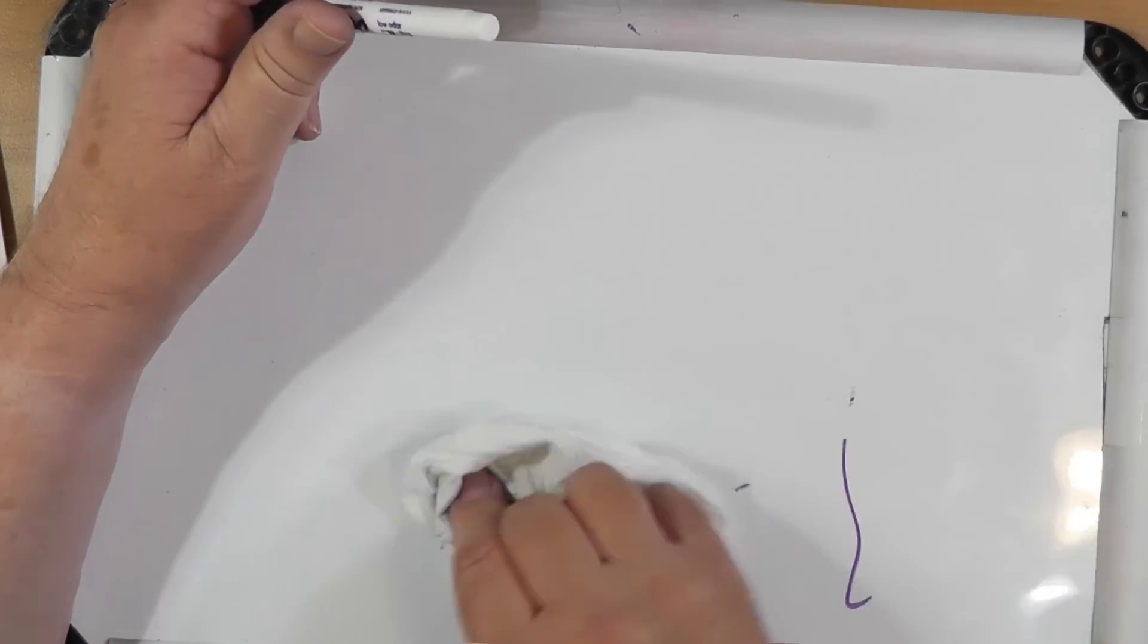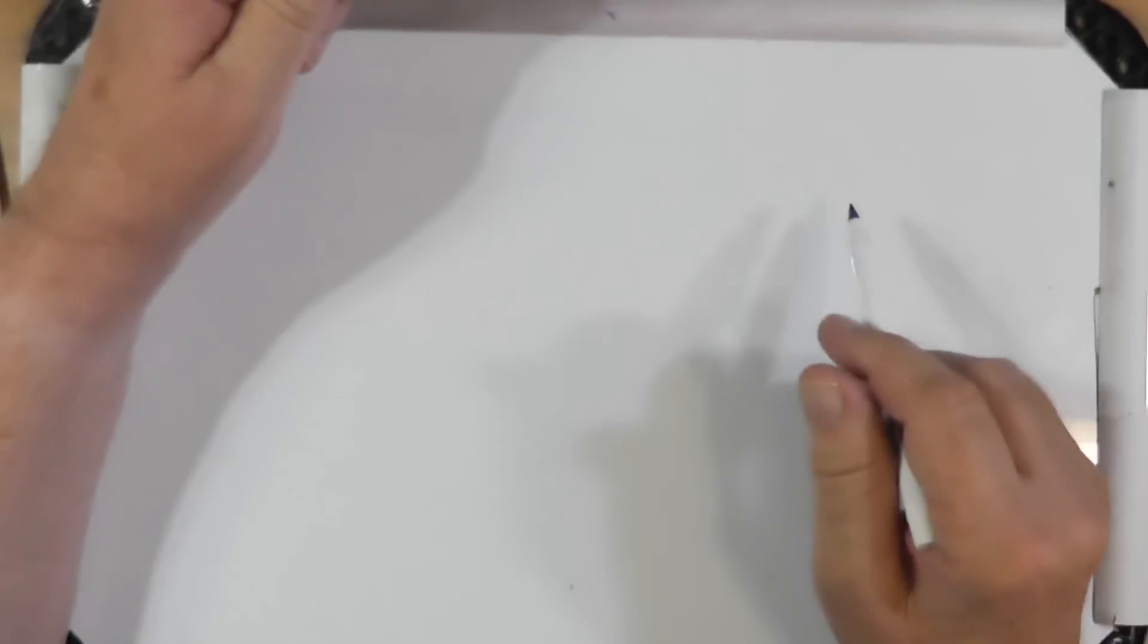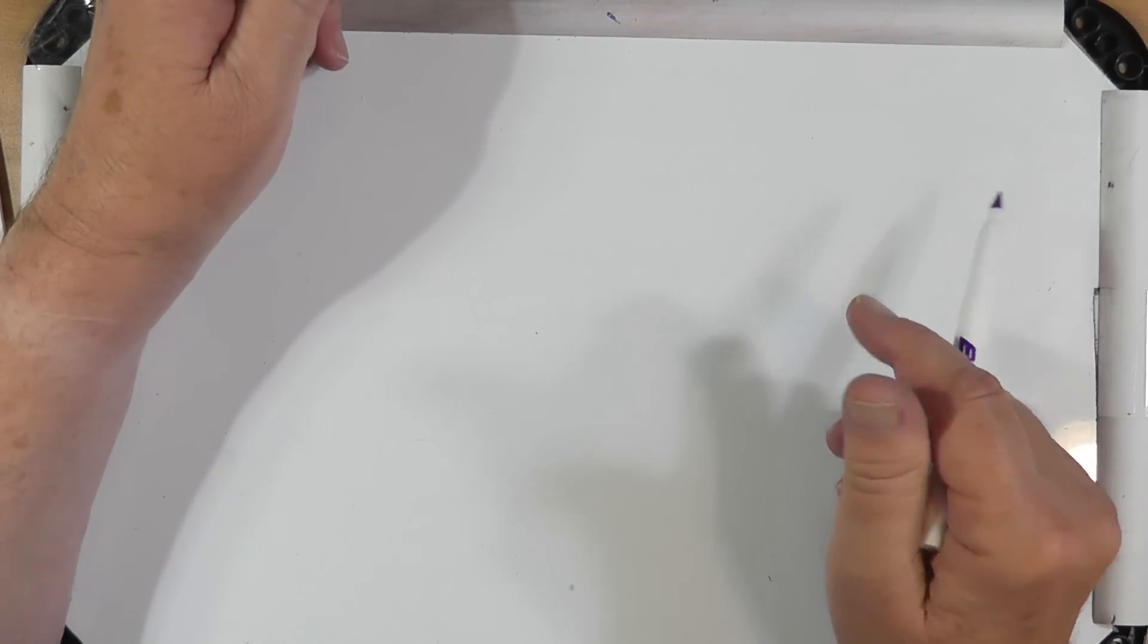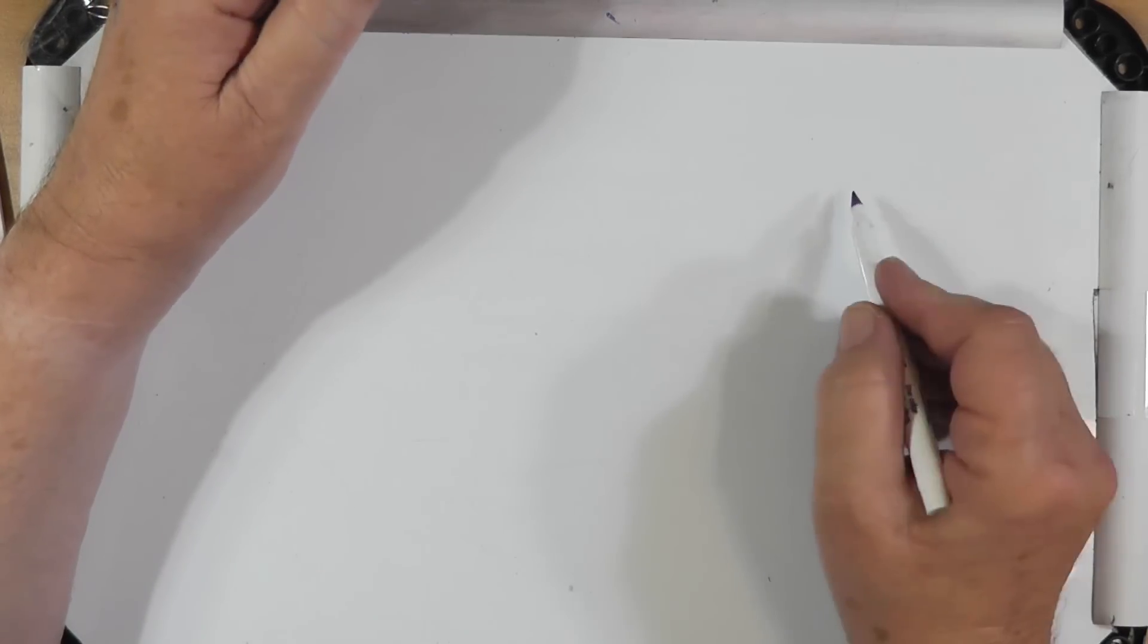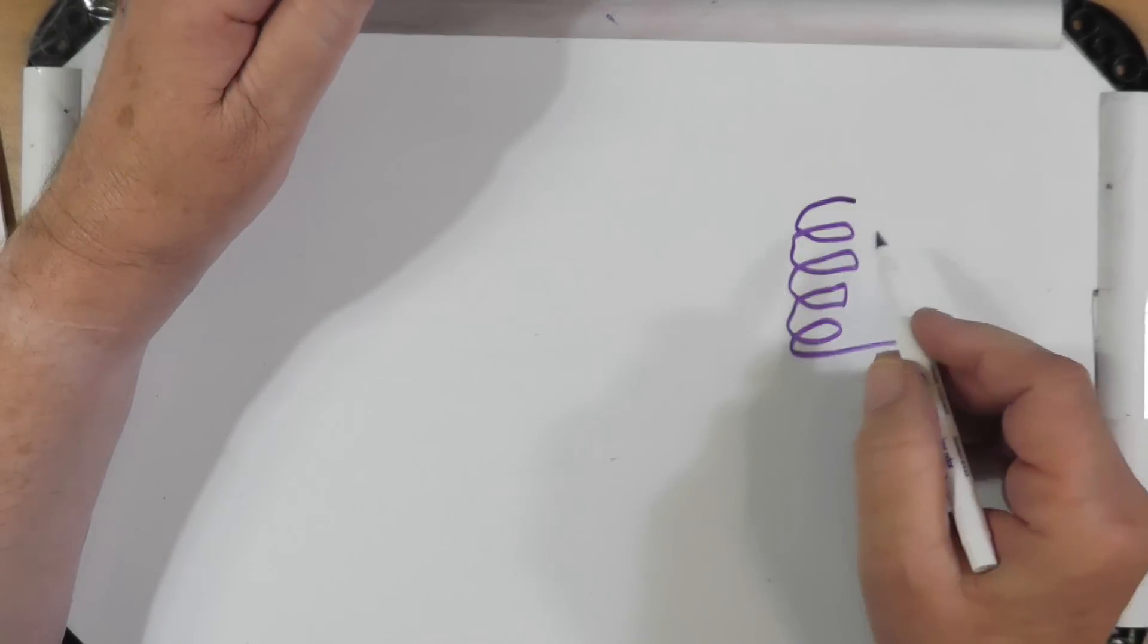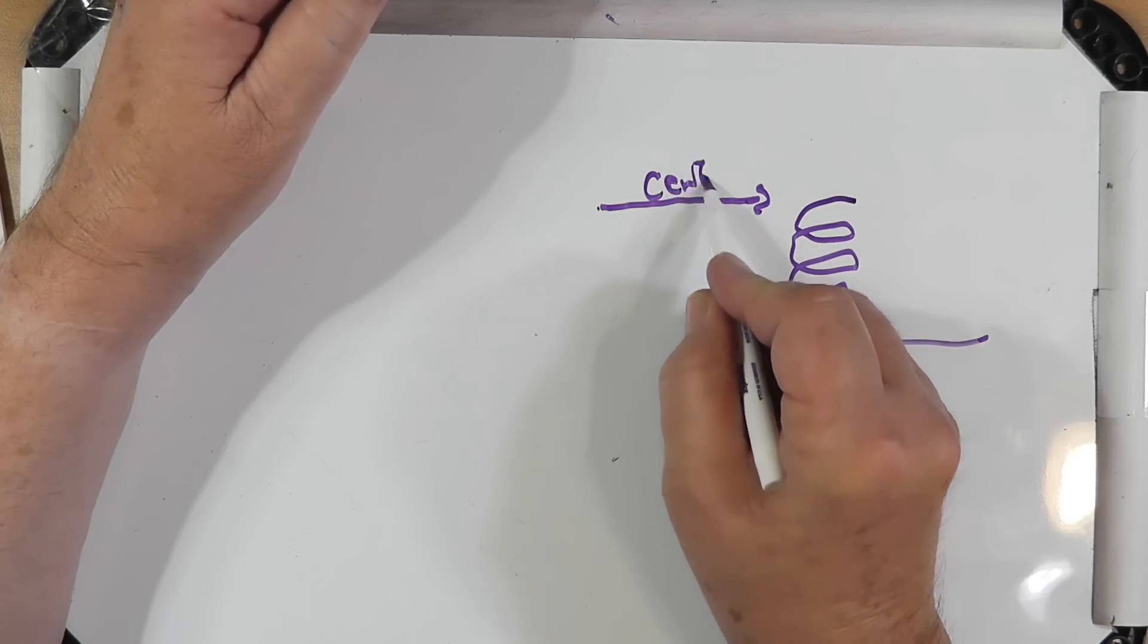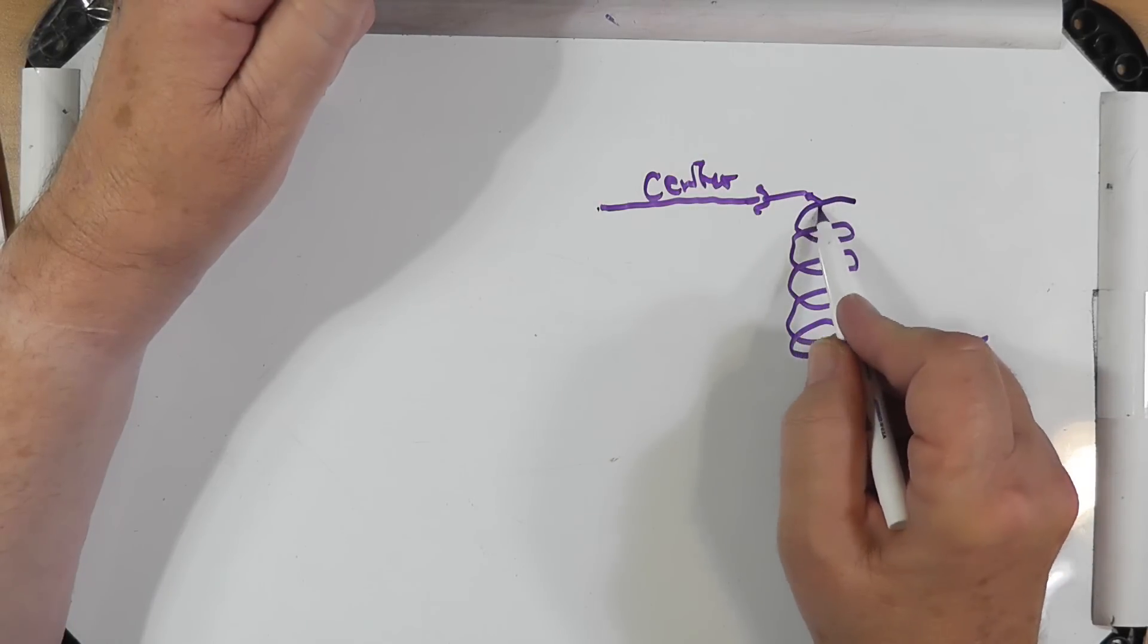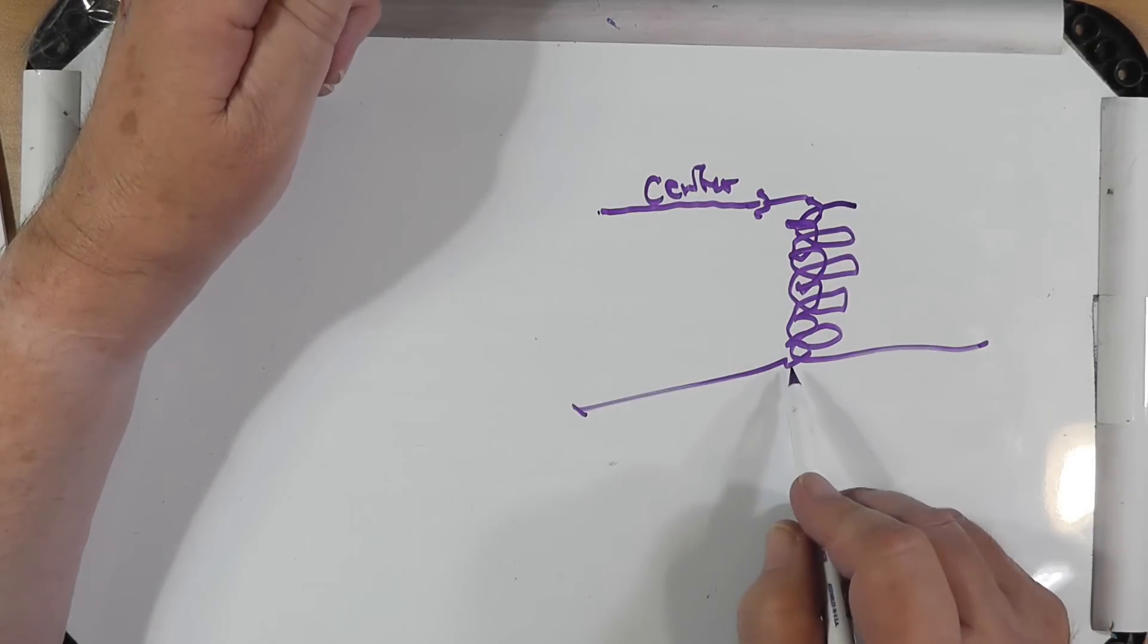You've got, usually wound around a toroidal core, some windings, and the center will connect. Sometimes there's a second winding in here.